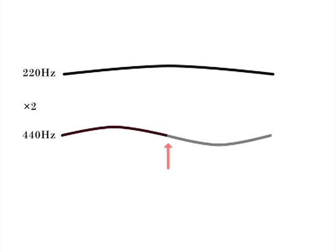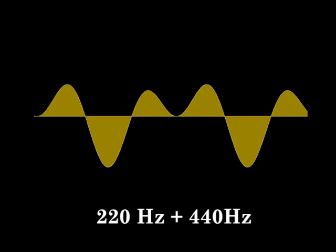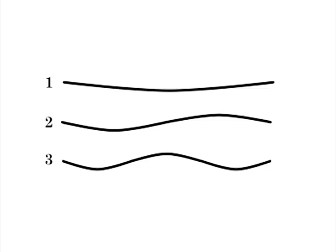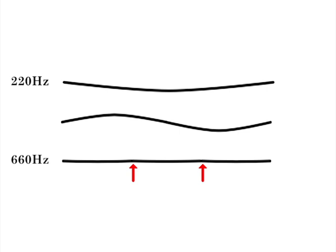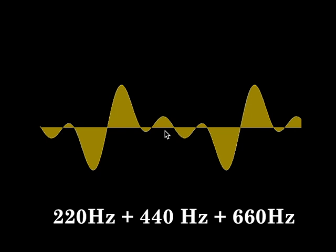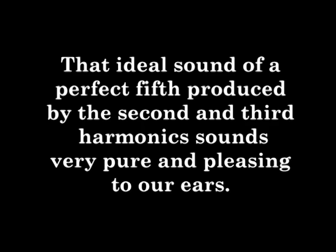The sound produced by the first and second harmonics, an octave apart, sounds very pure and pleasing to our ears, because the two tones have matching periodicity where one tone vibrates twice as fast as the other. The third harmonic is produced by dividing a vibrating thing into three equal parts. The resulting frequency is the fundamental, 220, times 3 which equals 660. This produces a sound one octave plus a fifth above the fundamental. That ideal sound of a perfect fifth, produced by the second and third harmonics, sounds very pure and pleasing to our ears.